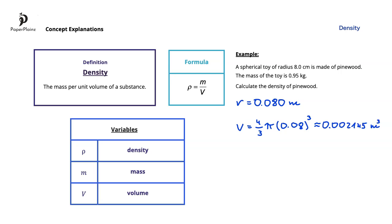Now, we just need to substitute into the density formula, giving us that rho is equal to 0.95 divided by 0.002145, and after carrying out this calculation and rounding, we get that the density of pine wood is approximately 440 kilograms per cubic meter. So, with this example, we have completed our learning about density.